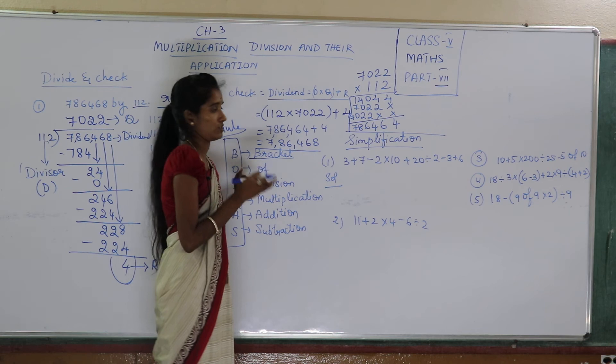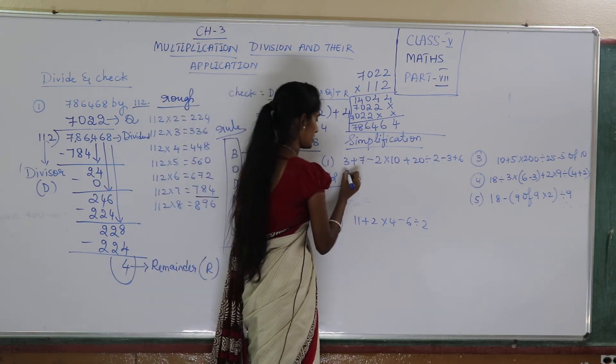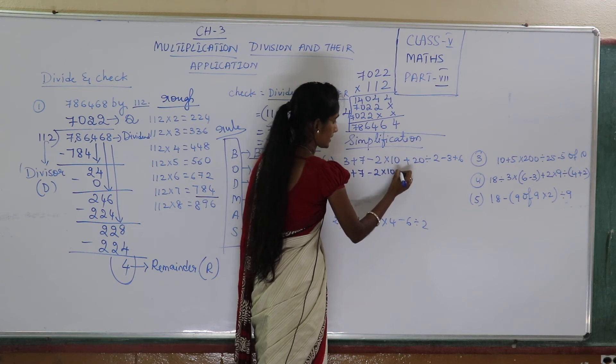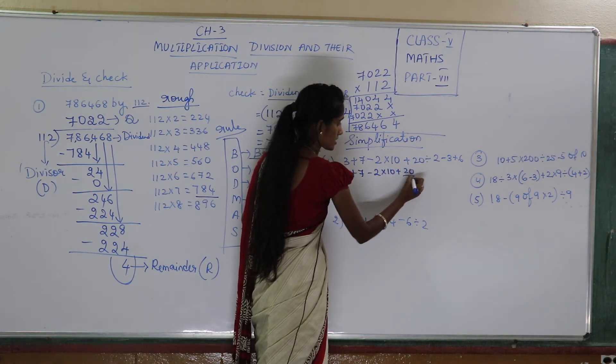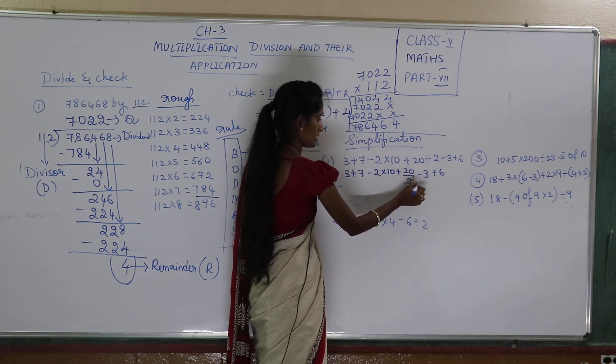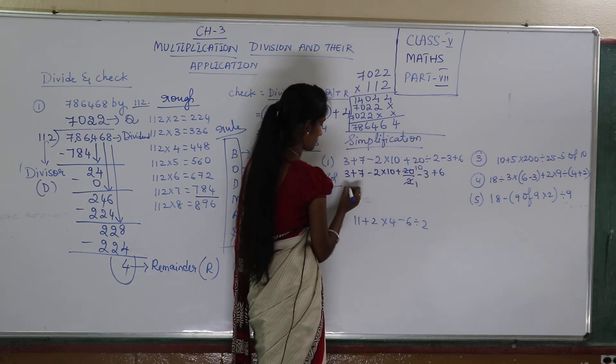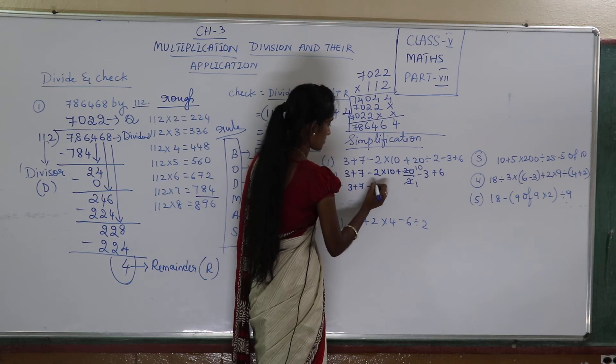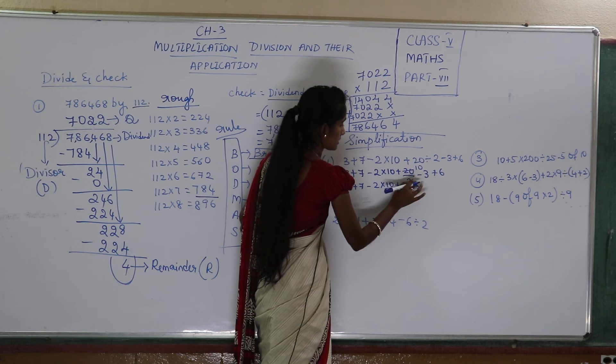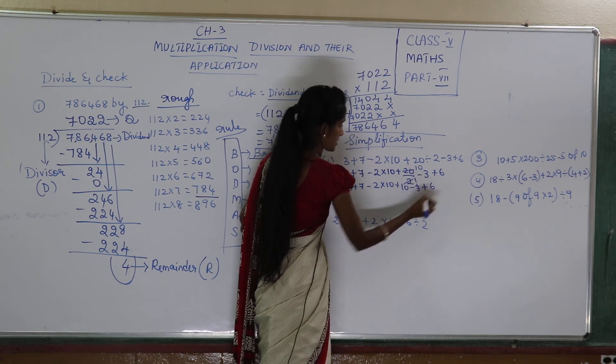First I will do division. Now you will not change any number. The other numbers will be the same. 2 into 10 plus 20, this is by 2. Now, 2 ones are 1, 2 tens are 10. So 3 plus 7 minus 2 into 10 plus 10 minus 3 plus 6.